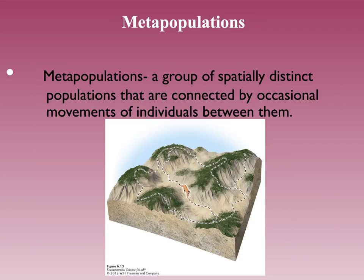Metapopulations are a group of spatially distinct populations that are connected by occasional movement of individuals between them. Looking at this picture, on each hilltop you could have a colony of cougars or pumas, and they can intermingle occasionally — here we have five separate metapopulations.